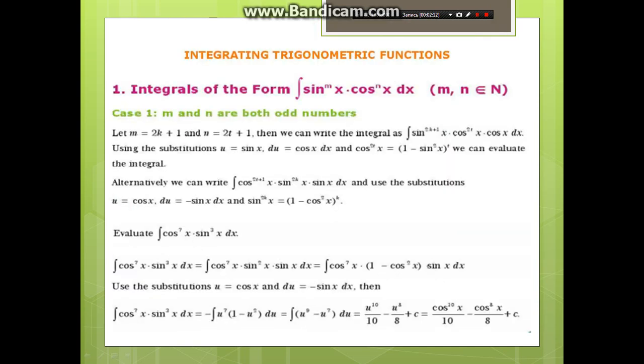Integrating trigonometric functions of the form ∫sin^m x cos^n x dx. Case 1: m and n both odd numbers. Let m = 2k + 1 and n = 2t + 1. Then we can write the integral using the substitution u = cos x, du = -sin x dx, and evaluate the integral.